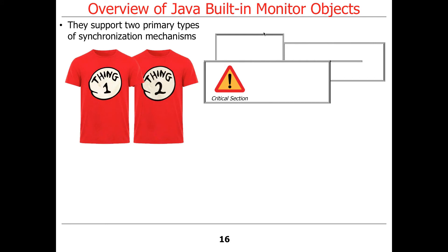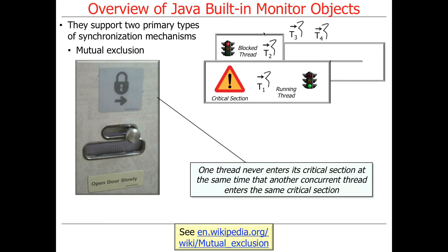There are two primary types of synchronization mechanisms provided by built-in monitor objects: mutual exclusion and something similar to coordination. Mutual exclusion is about making sure one thread doesn't enter its critical section at the same time a concurrent thread is already there — one at a time, you can't have multiple threads inside the critical section. Monitor objects do this by having a monitor lock used to grant access into the critical section. This diagram will be shown a lot as we talk in more detail about monitor objects.